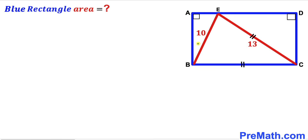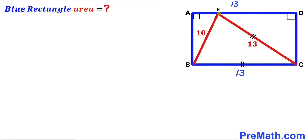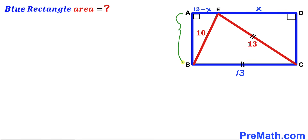We can see that segment CE equals side BC, and we know that this segment is 13 units, so therefore BC length has got to be 13 units as well. If side BC is 13 then side AD has got to be 13 units as well. Now let's assume that segment DE is X, then segment AE length has got to be 13 minus X. I am going to label side AB length as Y, then DC length has got to be Y as well.